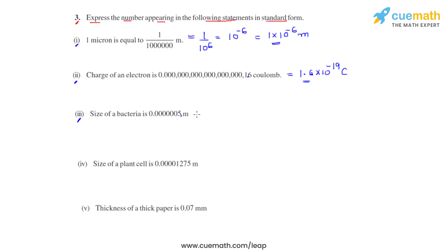It is to move by 7 places towards right. As it moves 7 places towards right, the power of 10 will be negative 7. So 5 times 10 raised to negative 7 meters is the standard form for the size of a bacteria.